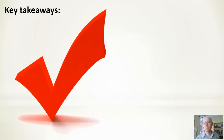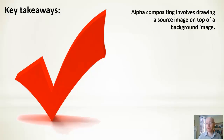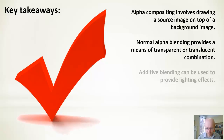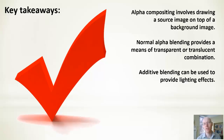Key takeaways: alpha compositing involves drawing a source image on top of a background image with lots of flexibility in how it's done. Normal alpha blending gives us a way of taking a transparent or translucent image and combining it with a background. Additive blending can be used for particle effects and simple lighting effects. Next in this series, part three, we'll look at fonts and how we can draw those.